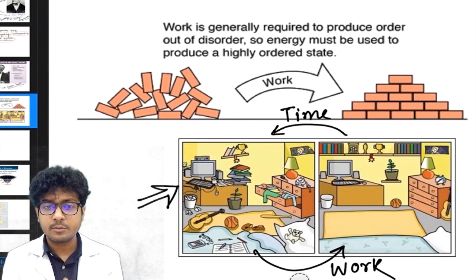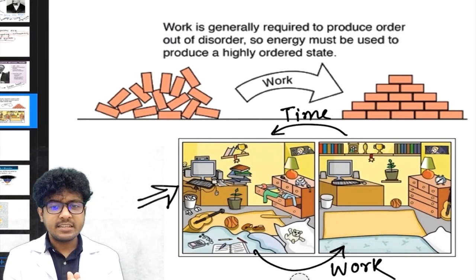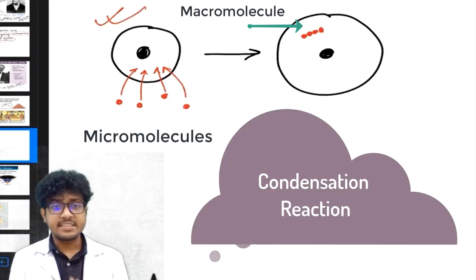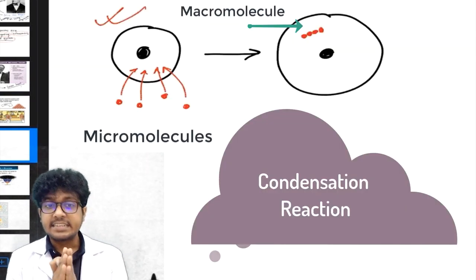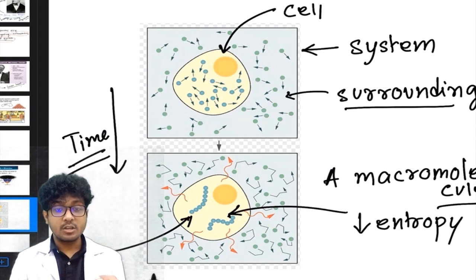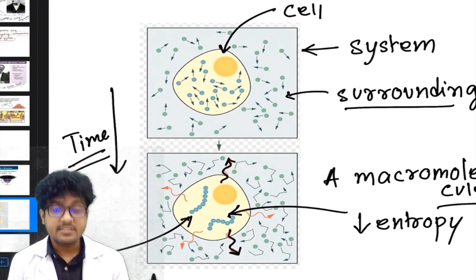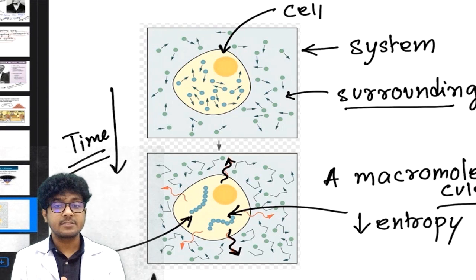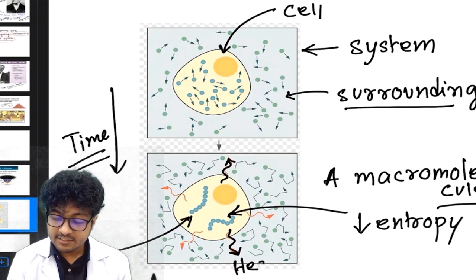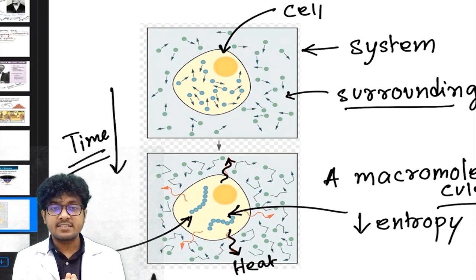Do living systems follow the second law of thermodynamics — that is, does entropy increase in them? Apparently, a cell is not following that law. It seems that a cell decreases its entropy. While synthesizing macromolecules, the cell releases some amount of heat, and due to this heat, entropy outside the cell increases to an enormous amount.